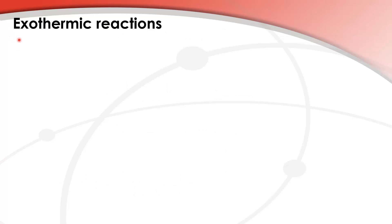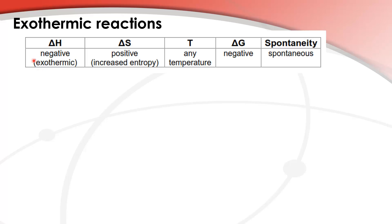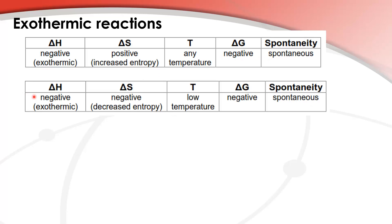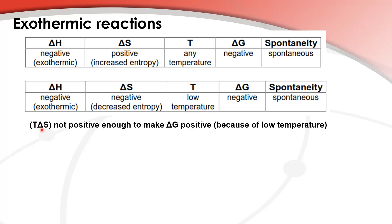Now we look at some other conditions for exothermic reactions. With a negative ΔH and a positive ΔS, it's spontaneous at any temperature. For the next set of conditions we have a negative ΔH — an exothermic reaction — but negative entropy, so decreased entropy, at a low temperature. ΔG will be negative and that's a spontaneous reaction, because T times ΔS is not positive enough to make ΔG positive due to the low temperature.